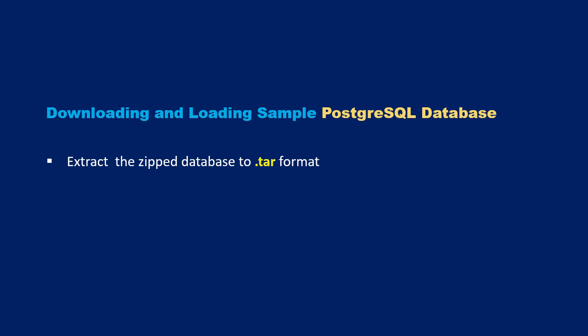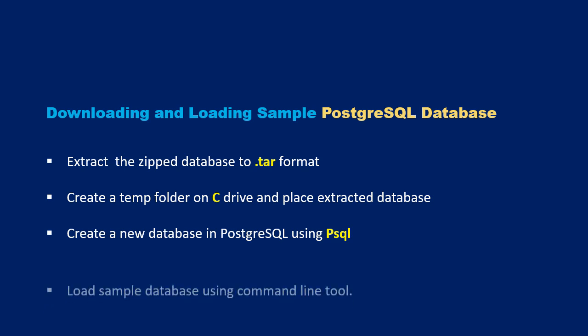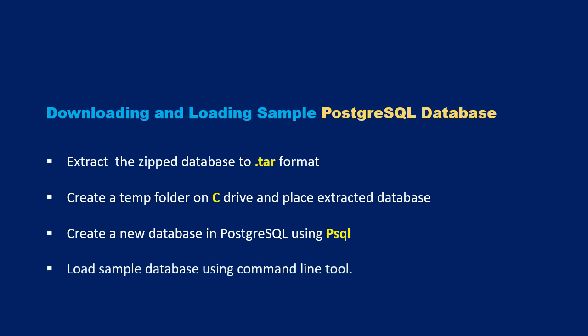Here are the steps we'll follow: first, extract the zipped database to a .tar format. Then create a folder on the C drive and place the extracted .tar file into that folder. We will create a new database using the PSQL tool to restore the sample database into. We will then load the sample database using a command line tool — Command Prompt on Windows or Terminal on Mac. Finally, we'll verify the loaded database by running a basic query.